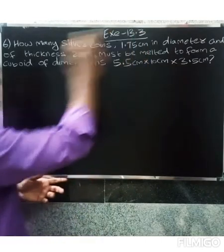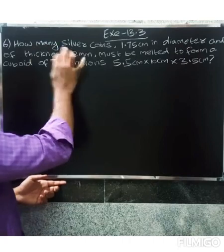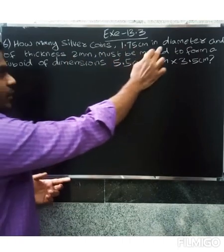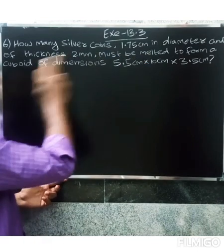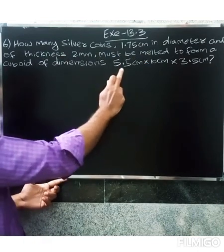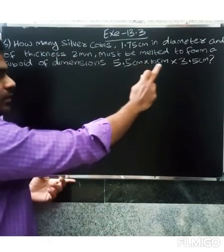Welcome friends to Exercise 13.3, Question 6. How many silver coins 1.75 centimeter in diameter and of thickness 2 millimeters must be melted to form a cuboid of dimension 5.5 centimeter into 10 centimeter into 3.5 centimeter?